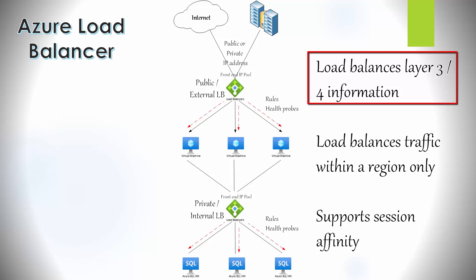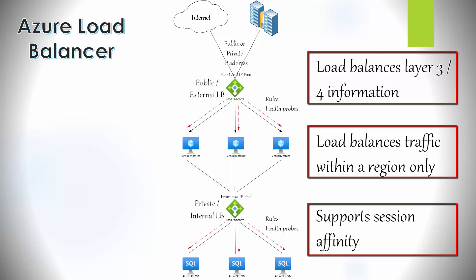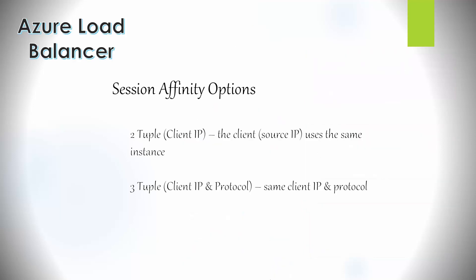It can still be fine for HTTP/HTTPS traffic if you only need basic functionality. However, unless you use the cross-regional load balancer subtype, this load balancer works within a region only — you cannot distribute traffic across different regions. It also supports two options for session persistence, also known as session affinity, source IP affinity, or client IP affinity. This feature ensures connections from the same client go to the same backend instance, which is sometimes needed — for example, when authentication requires multiple connections to the same virtual machine.